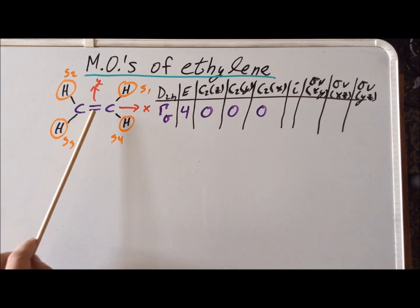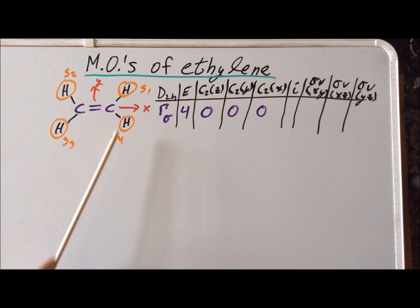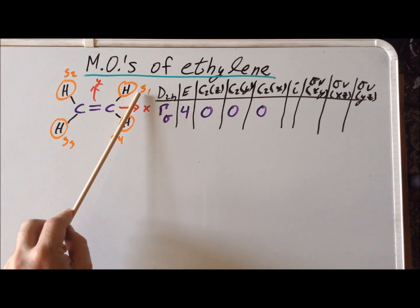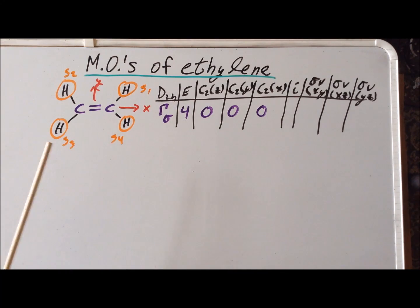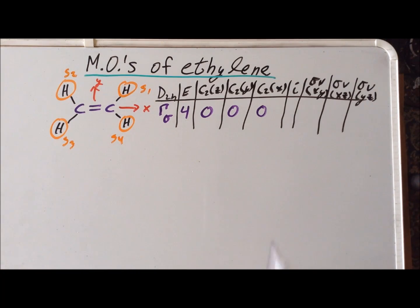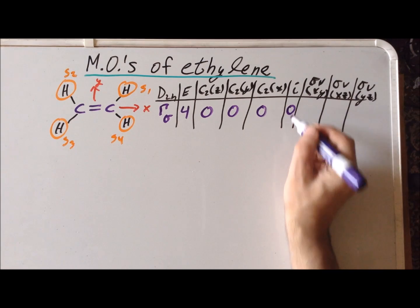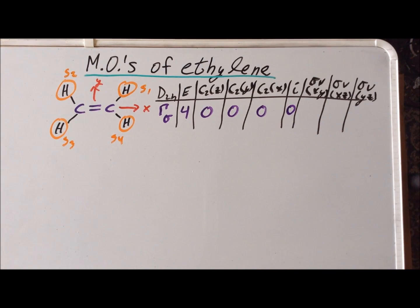For the inversion, our center of inversion is halfway between the carbon atoms. So that would take S1 to S3 and S2 to S4. Since all move, our character again is zero.